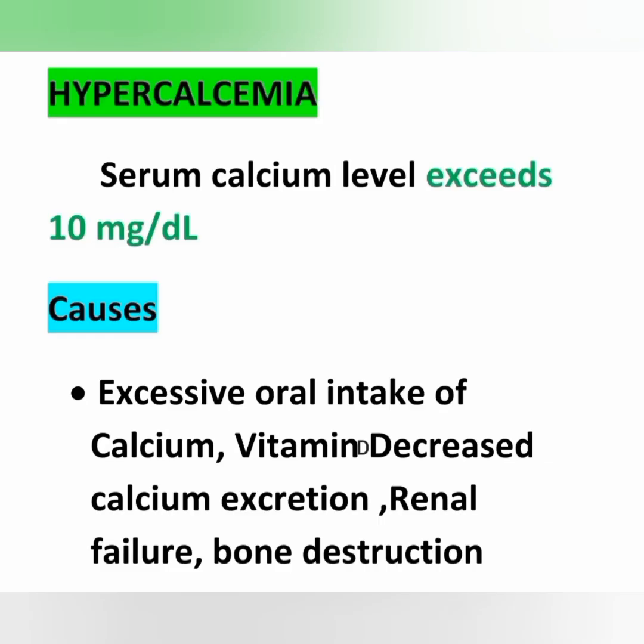Hypercalcemia means serum calcium level exceeds 10 milligrams per deciliter. The causes mainly include excessive oral intake of calcium and vitamin D, decreased calcium excretion, renal failure, and bone destruction. These are some of the important causes of hypercalcemia.